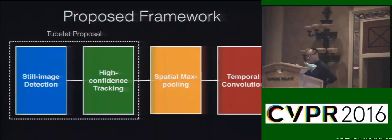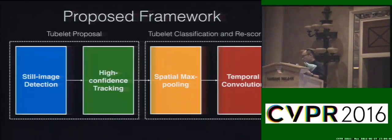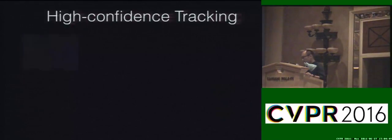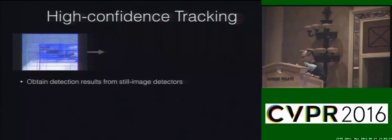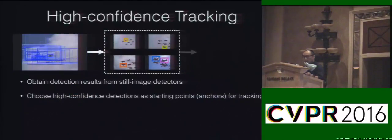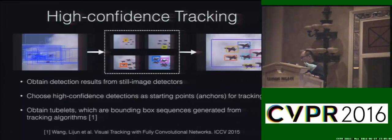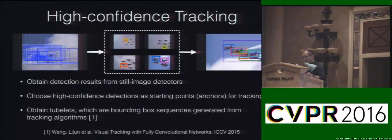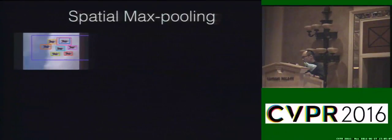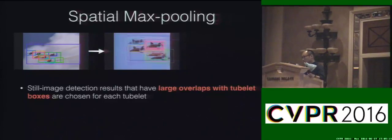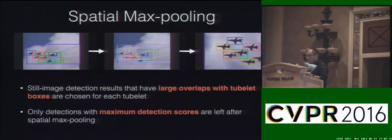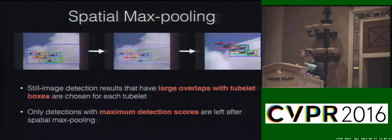The first two parts form the tubelet proposal, and the second two parts are the tubelet classification and rescoring. For high-confidence tracking, we first obtain the still image detections, then from some frames we select the high-confidence detections as the starting point for tracking, using a deep recurrent network. From these tracking results, we select the still image detections that have large overlaps with the tubelet boxes, keeping only the detections with local maximum detection scores.